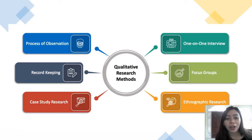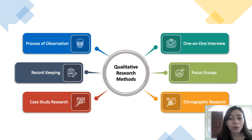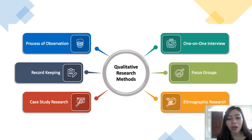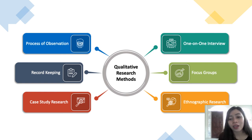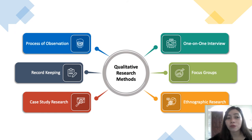After thinking of a research design, let's proceed to qualitative research methods — the methods you need to incorporate in your research design. These include the process of observation, what type of record keeping, and whether it is a case study using one-on-one interviews or focus group discussions, or an ethnographic research. These methods will apply to each of the kinds of research design.